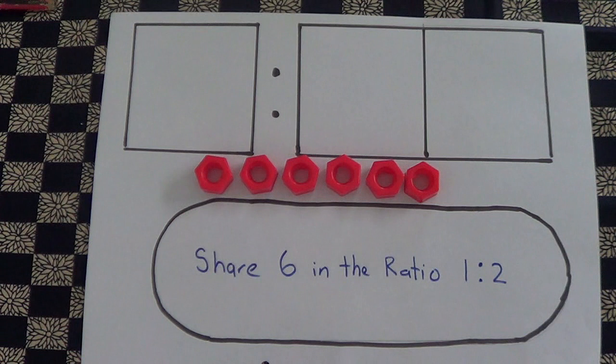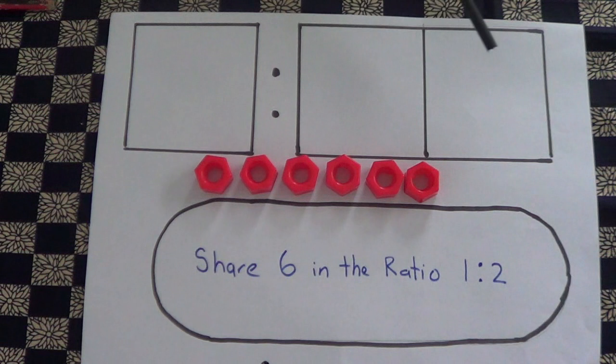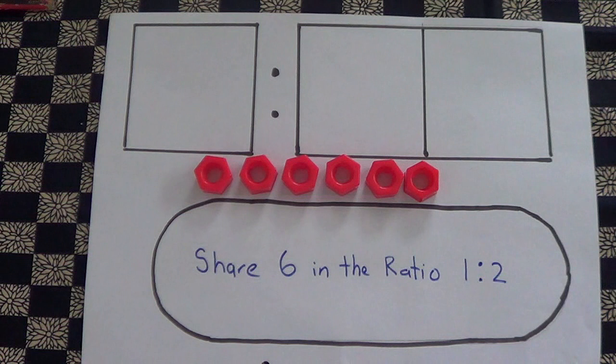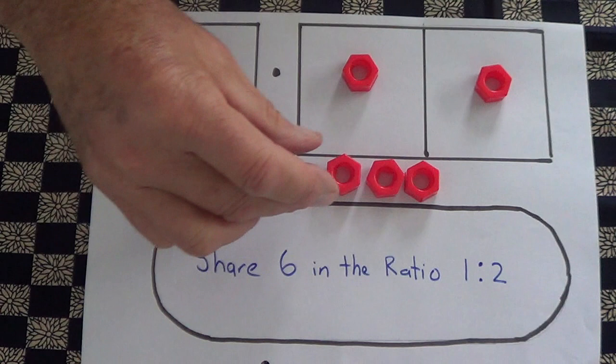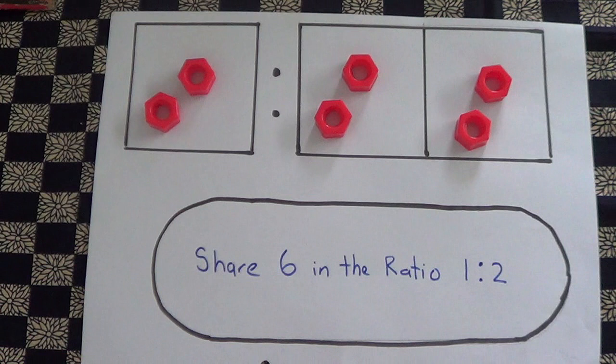...is this diagram. We've got one box here and two boxes over here. There's the one box, there's the two box. What we have to do is share them evenly, so I'll put one in each for a start, then I'll put a second one in each, and we've finished.